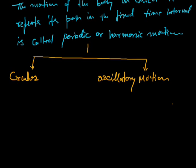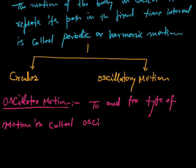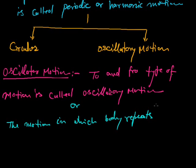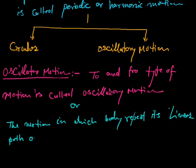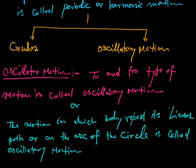To-and-fro type of motion is called oscillatory motion. Or we can say the motion in which a body repeats its path on a linear part or on the arc of a circle is called oscillatory motion — either on a linear part or on the arc of the circle.